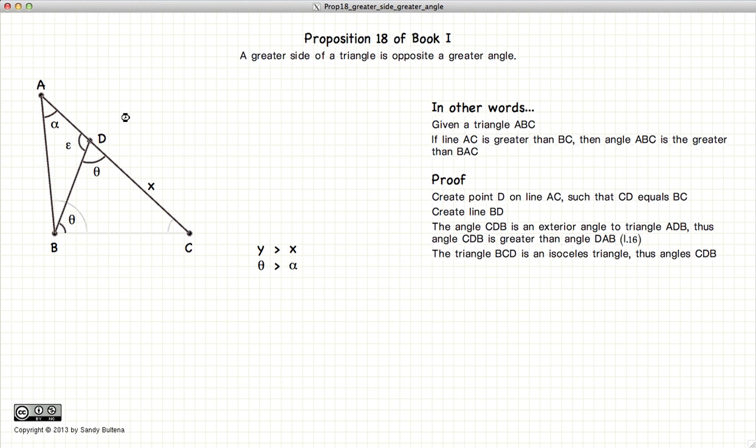Now if we look at the triangle BDC, since it's an isosceles triangle, i.e. two sides of the triangle are equal in length, then this angle here is theta, and this angle here is theta.